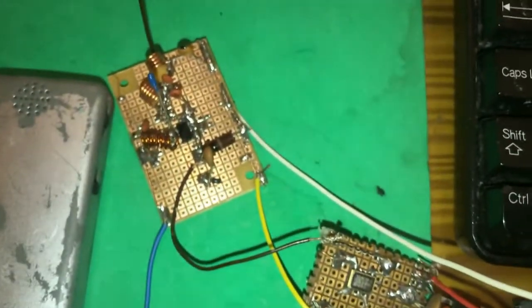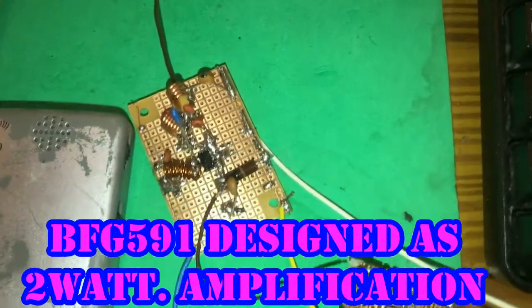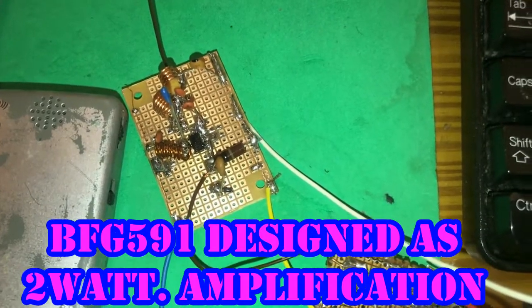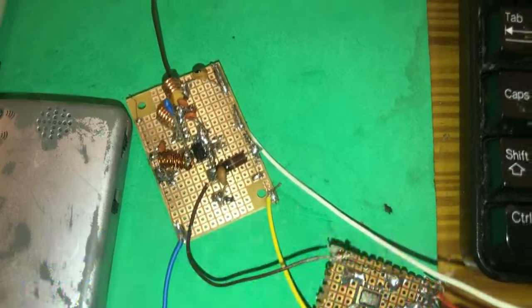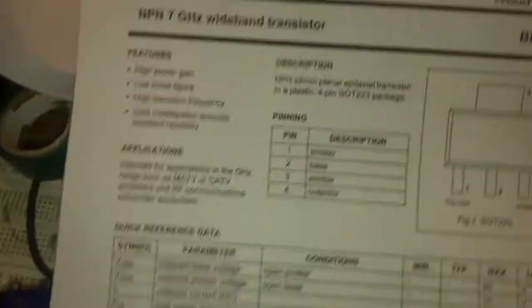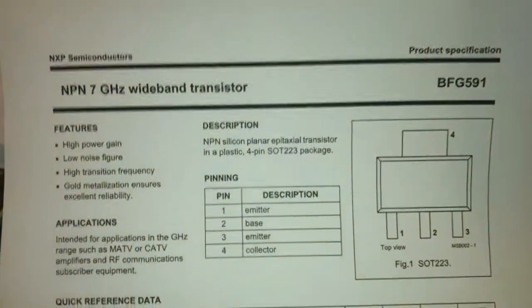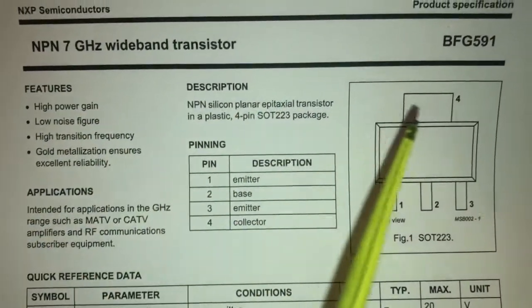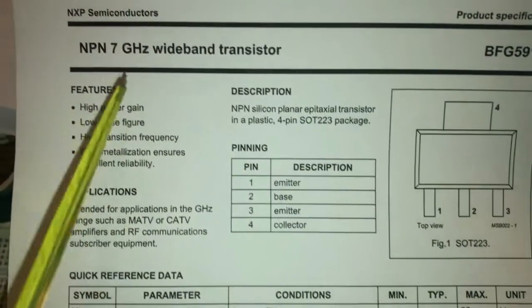The BFG591 is for RF amplifying. As you can see in the schematic, this IC BFG591 transistor works from 100 megahertz up to 7 gigahertz.